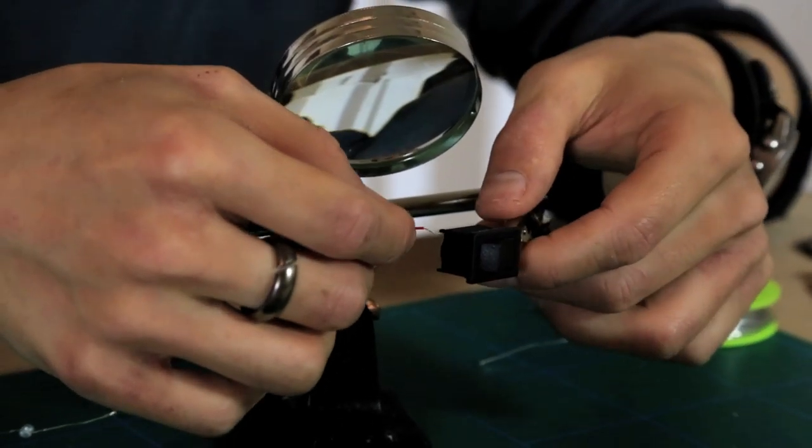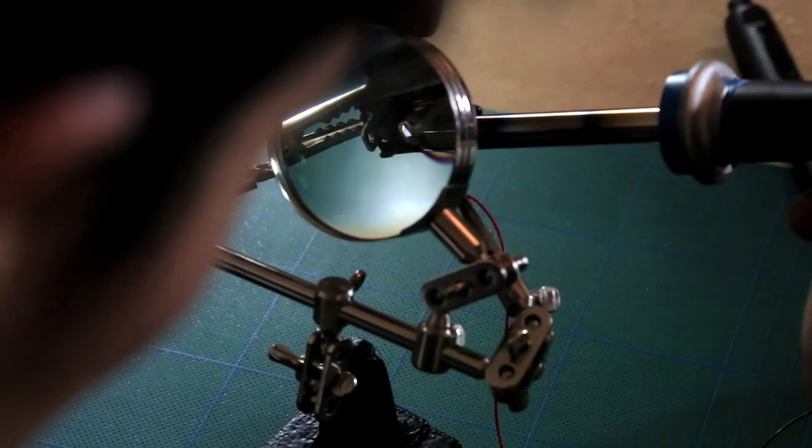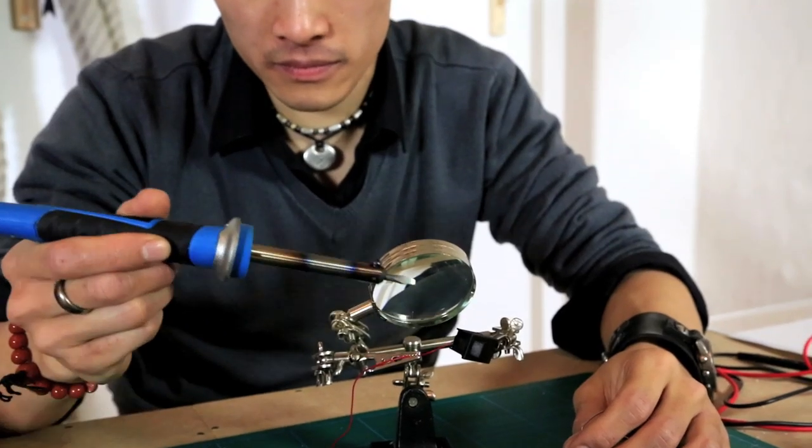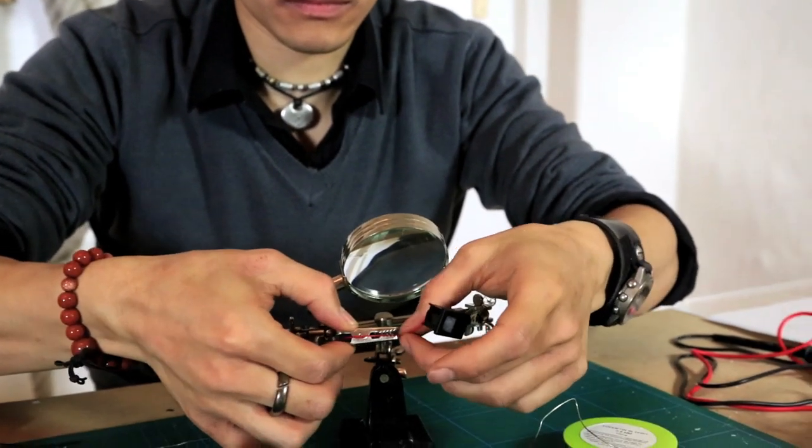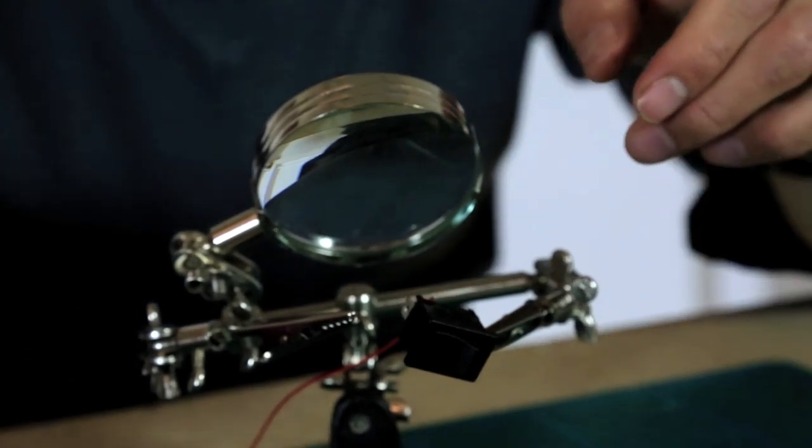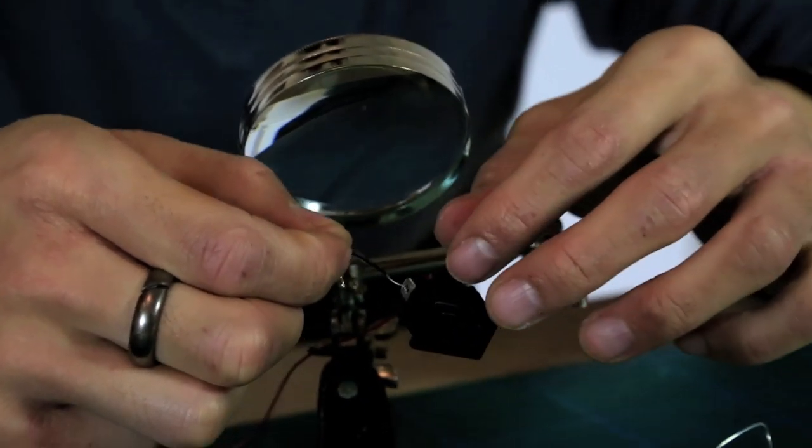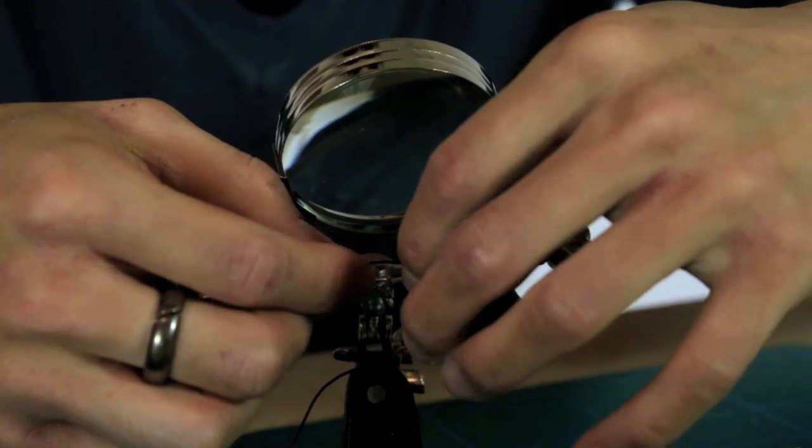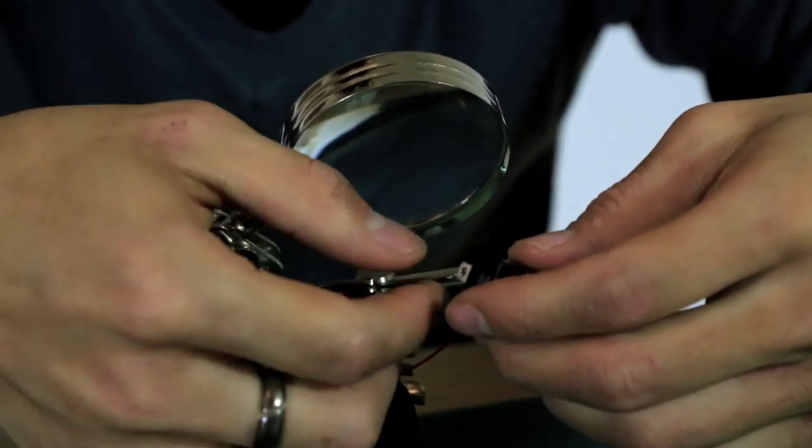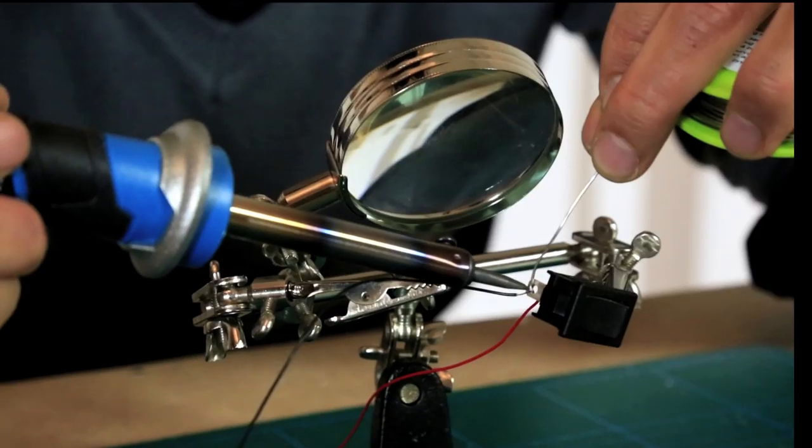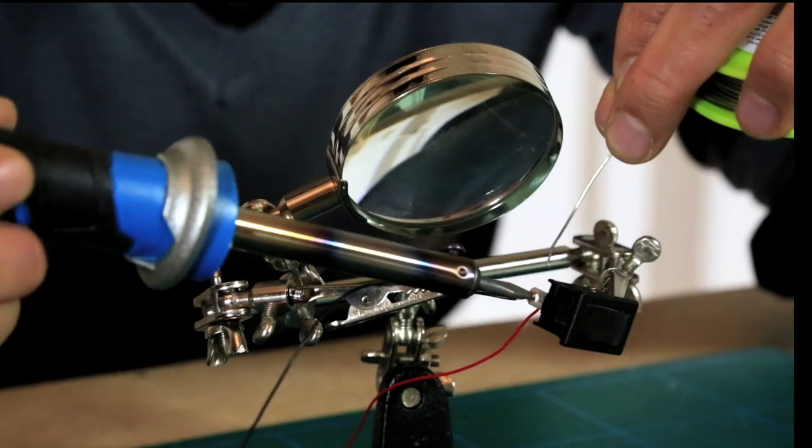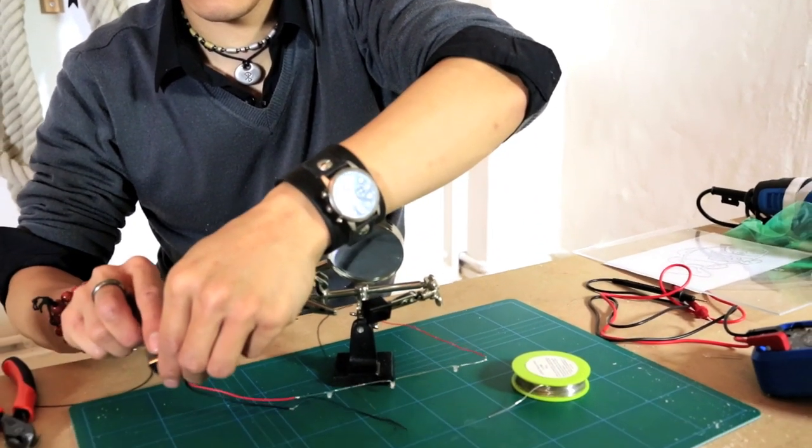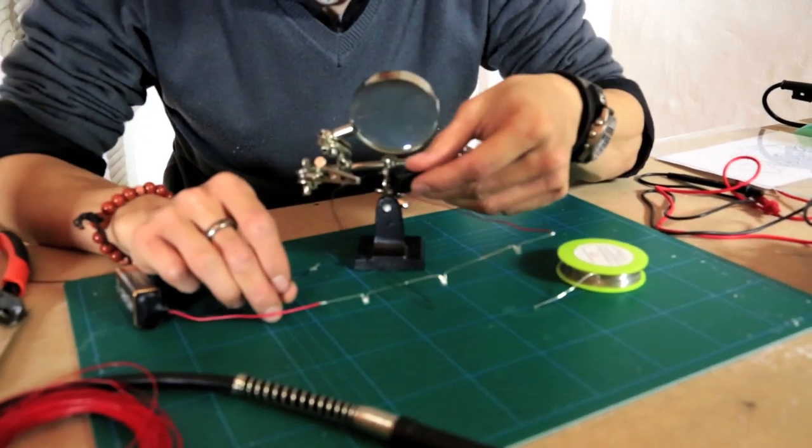So now we've added on the battery, we just need to solder on a switch. And we're done with our soldering. Just attach the battery, flip the switch and see if our circuit works. Perfect.